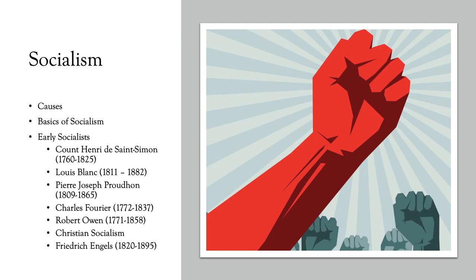We'll also see examples of utopian socialism, which was more common in the early period, where social reformers were quite idealistic — wanting to create isolated communities defined by cooperation rather than competition, where everything was shared. As we know, that is not realistic. Finally, socialism is going to be supported by the working class — conservatism by the upper classes (the nobility, aristocracy, church), liberalism by the middle classes (the bourgeoisie), and socialism by the working classes and also some radical intellectuals: students, writers, and sometimes professors.